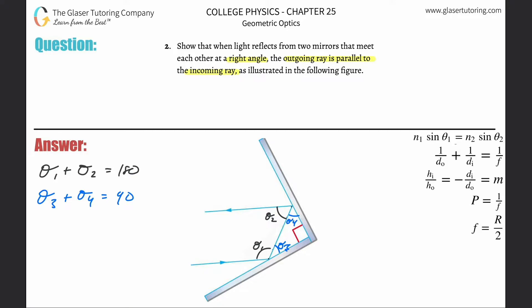Due to the law of reflection, when this incoming ray hits the mirror at this point, the angle of incidence has to equal the angle of reflection. That's what they had in the picture originally. So this theta three must also equal this side — that must also be theta three. You can see the symmetry in the problem.